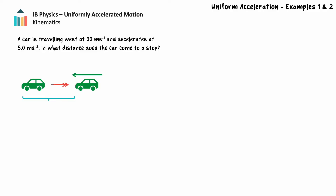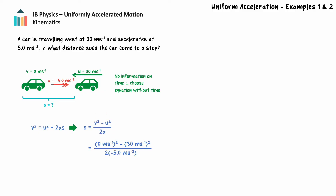Let's follow our problem-solving steps. First, we'll draw a picture of the motion. Since the car is decelerating, the initial velocity is in the opposite direction of the acceleration. Next, we'll list the known information and identify any unknown information. We see only two values: the initial velocity and the acceleration. We'll assign the initial velocity as positive and the acceleration, which is in the opposite direction, as negative. We have a third known value provided in words — the car comes to a stop, meaning the final velocity is 0 m/s. We want to find the displacement. We don't have or need time, so we select the formula v² = u² + 2as. We rearrange for displacement, substitute in our values, and solve. The car's displacement as it slows to a stop is 90 meters.